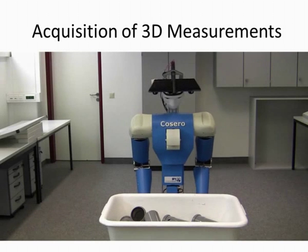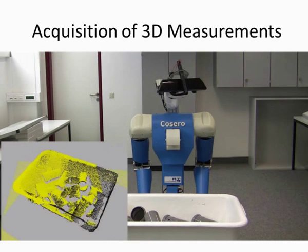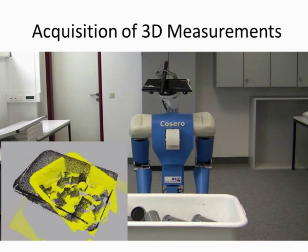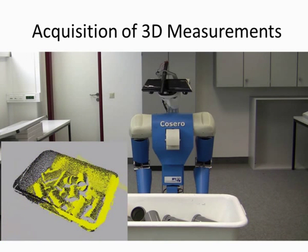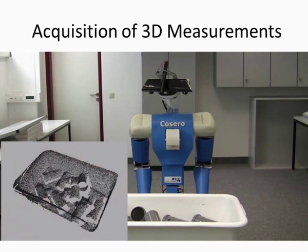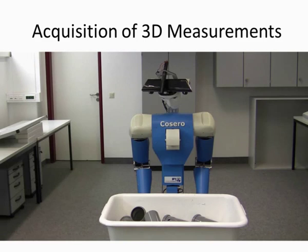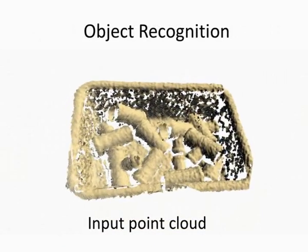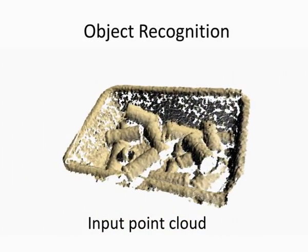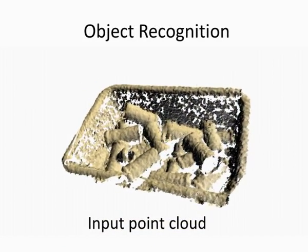After approaching the box, the robot acquires 2D point clouds from different views. The point clouds are aligned to each other by means of 3D scan registration. Here we can see the input point clouds of the scanned data.